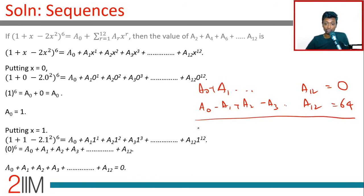Add these two equations - all the odd terms will get cancelled: 2(A₀ + A₂ + A₄ all the way till A₁₂) = 64, or A₀ + A₂ + A₄ all the way till A₁₂ = 32.